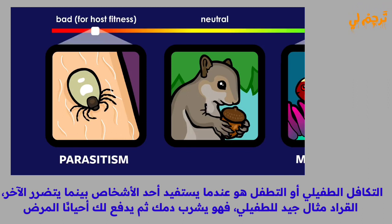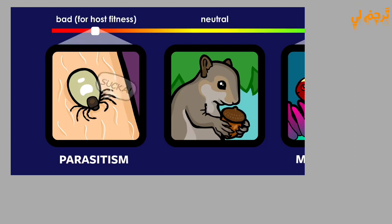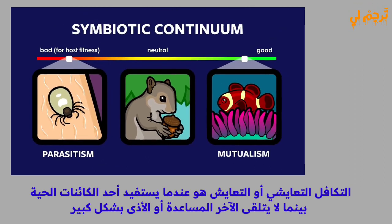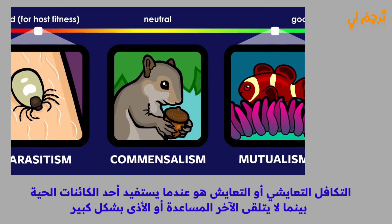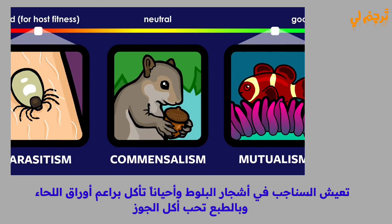Ticks drink your blood and then sometimes repay you with Lyme disease — total jerks. Commensalistic symbiosis, or commensalism, is when one organism benefits while the other is not dramatically helped or harmed. Squirrels live in oak trees; they sometimes eat bark, leaf buds, and of course they love to eat acorns.